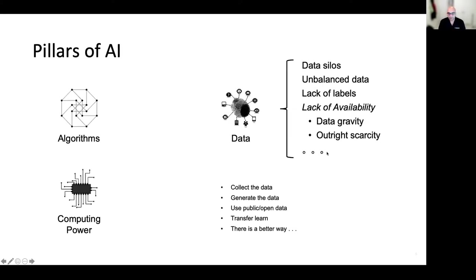AI or ML is realized using three things: data, algorithms you can apply to model the data, and enough computing power to achieve this. Most algorithms you'd want to use are available via libraries. Computing power has also been getting cheaper and readily accessible — the barrier might be cost, but for the most part it is readily available commercially. Data, however, is a different story. Due to regulations or sheer logistics, or the foresight required to model a problem, and the cost associated with collecting a large quantity of data, getting the right and enough data for model building remains a challenge.